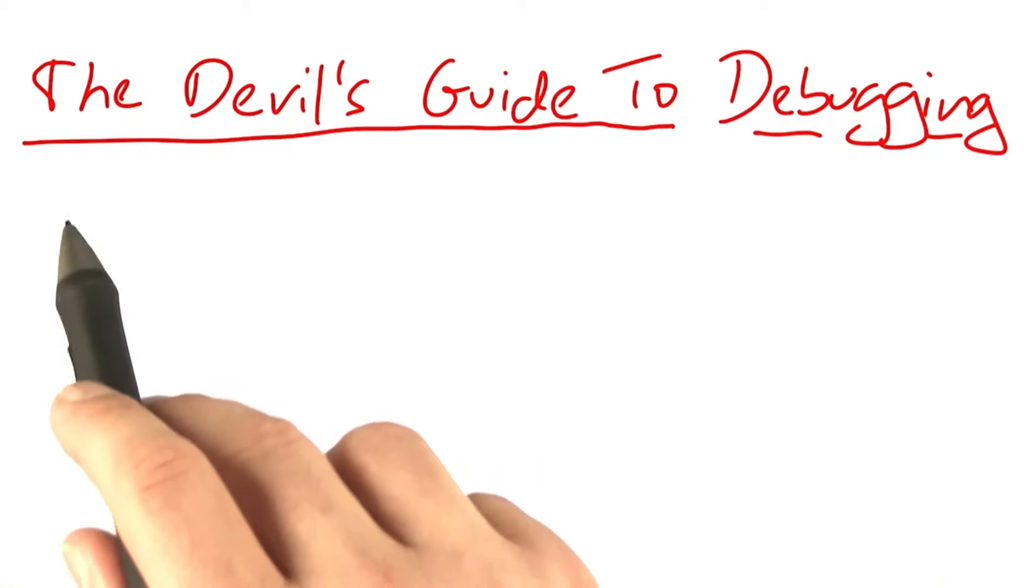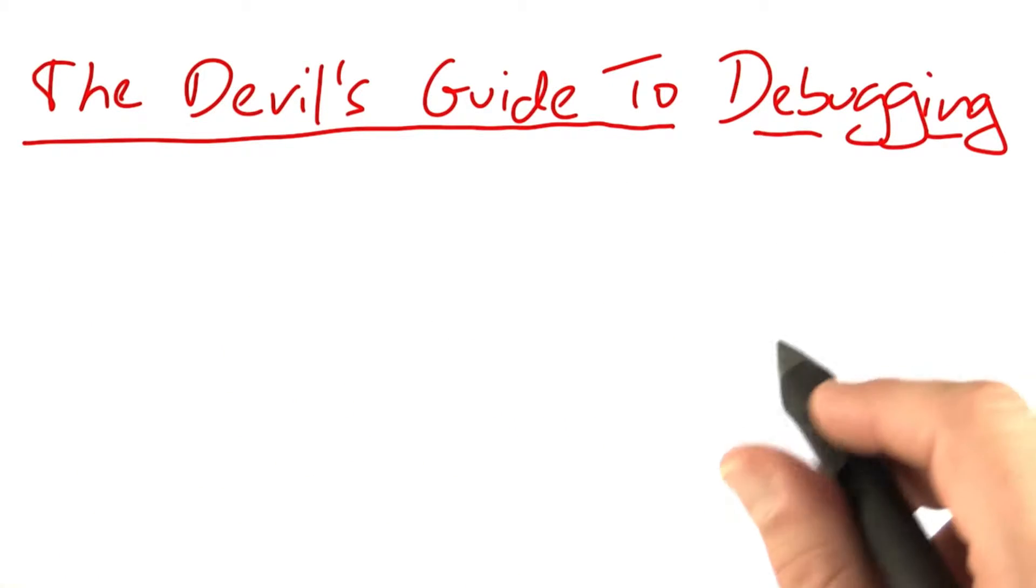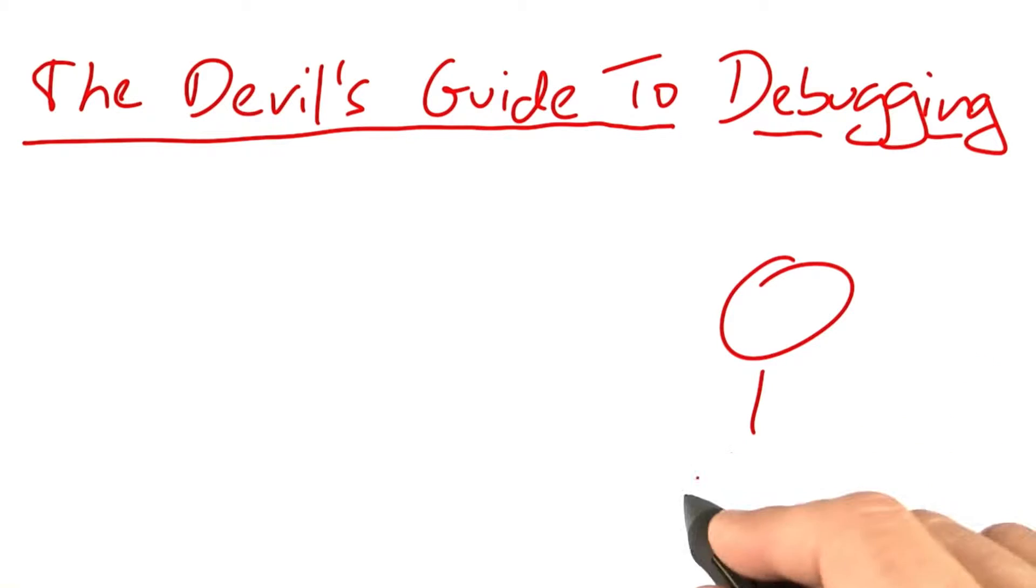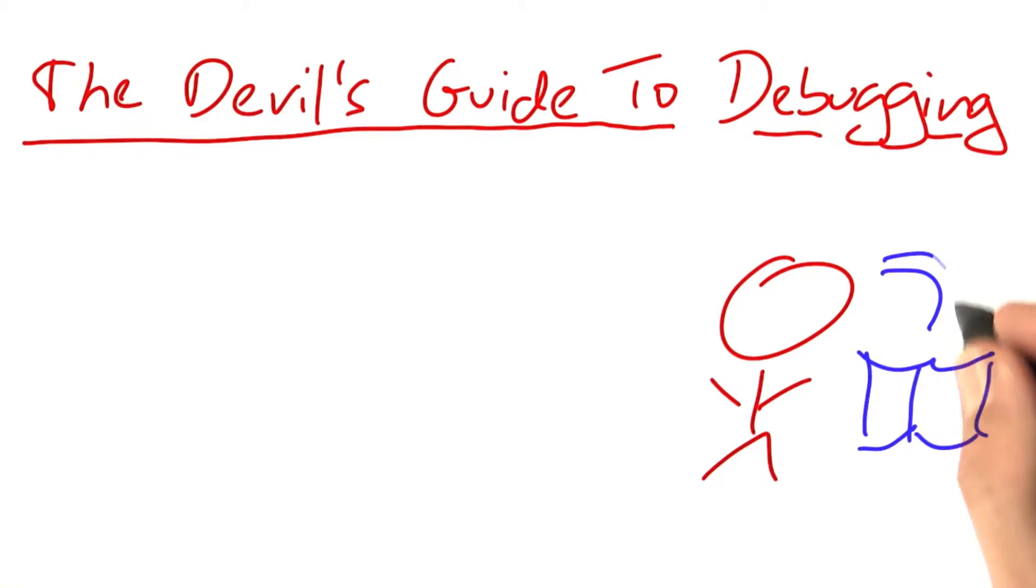All of these strategies come from a chapter named The Devil's Guide to Debugging, which was written by Steve McConnell in a book called Code Complete in 1993. It encompassed all the wisdom about programming that Steve McConnell had at the time.